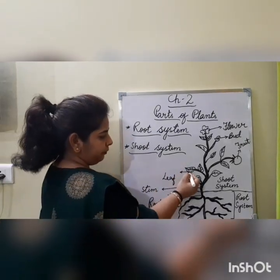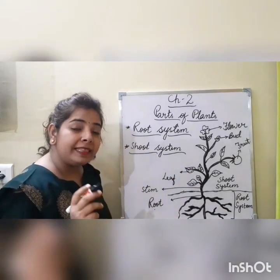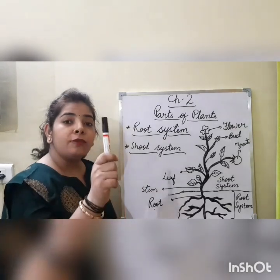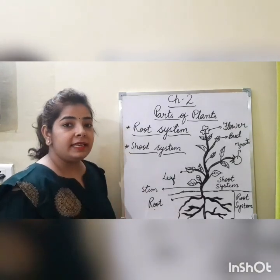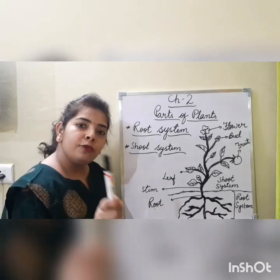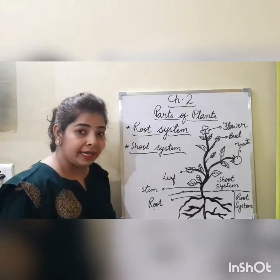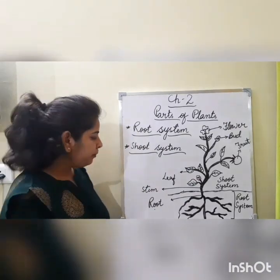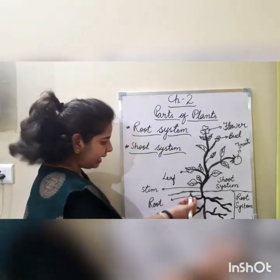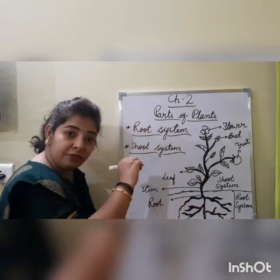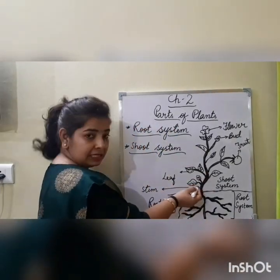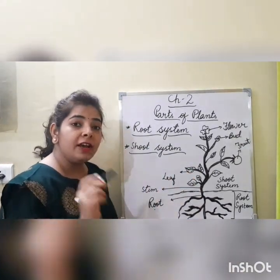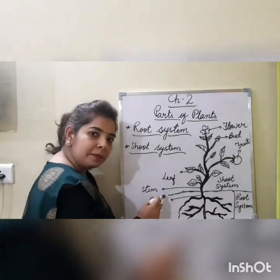Now, leaf. What does the leaf do? Leaf prepares food for the plant. Root absorbed water and minerals, stem passed them to the leaf. The leaf uses water, minerals, sunlight, and carbon dioxide to prepare food.